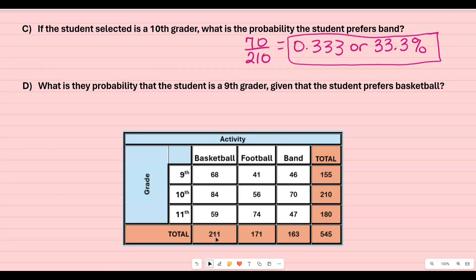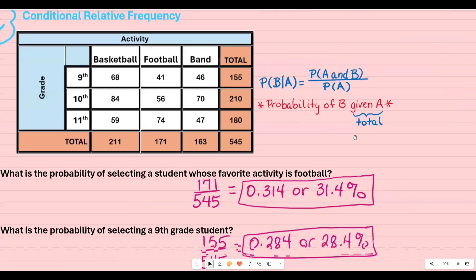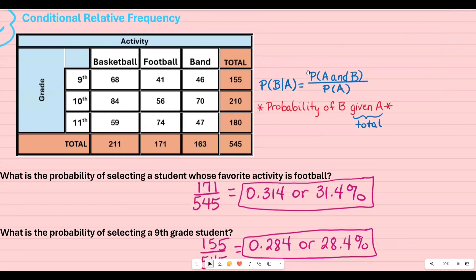Once I simplify that that's going to give me 32.2%. So again you will see in a later video that the actual formula that I am doing right there is I'm taking where they both meet. So here the basketball and the ninth grader. That's probability of A and B and then I'm taking the total of whatever was given. In this case basketball was given. So that would have been 211.